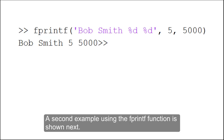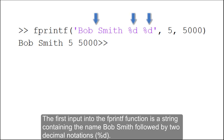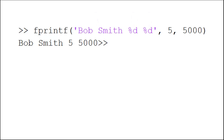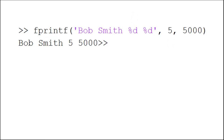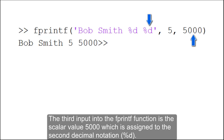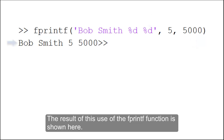A second example using the fprintf function is shown next. The first input is a string containing the name Bob Smith followed by two decimal notations. The second input is the scalar value 5, assigned to the first decimal notation, and the third input is the scalar value 5000, assigned to the second decimal notation. The result of this use of the fprintf function is shown here.